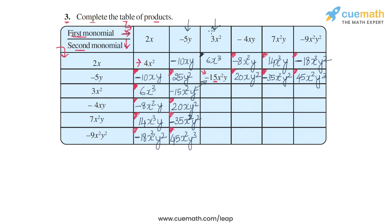Now the column of 3x². The cell 3x² × 3x² gives 9x⁴, since 3 × 3 is 9 and x² × x² is x⁴. Then 3x² × (-4xy) gives -12x³y, since 3 × (-4) is -12 and x² × xy is x³y; the symmetric cell (-4xy) × 3x² is also -12x³y.